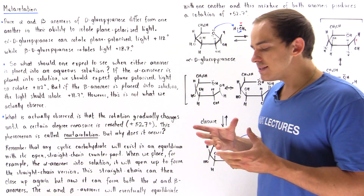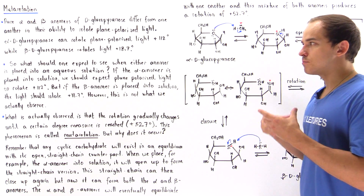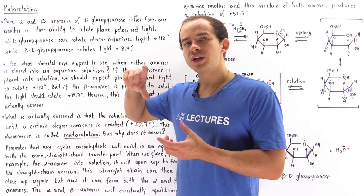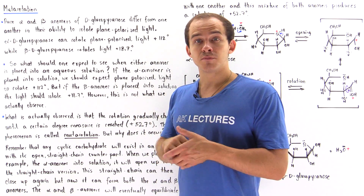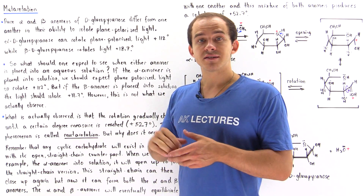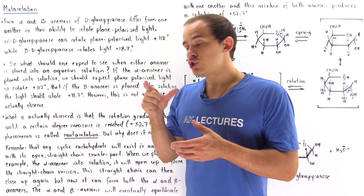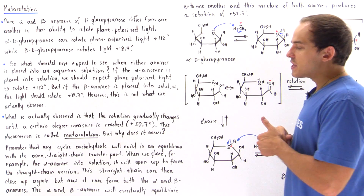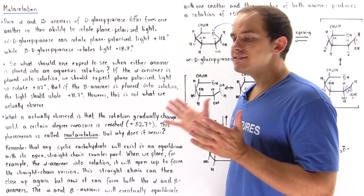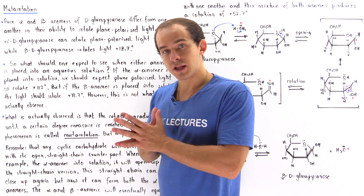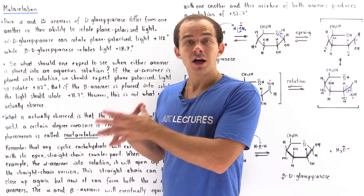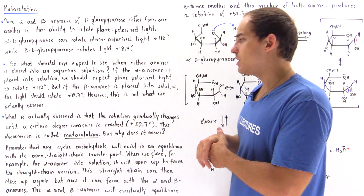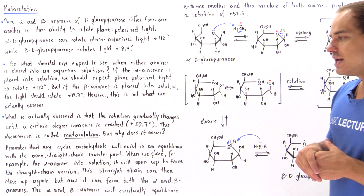Mutarotation is the process by which the degree measure for the rotation of plane polarized light changes until a certain degree measure is reached. But the question is: why exactly does this take place? What causes this phenomenon to actually occur?